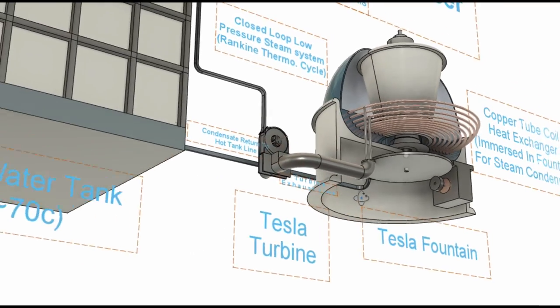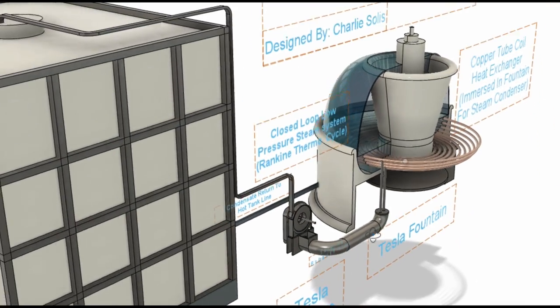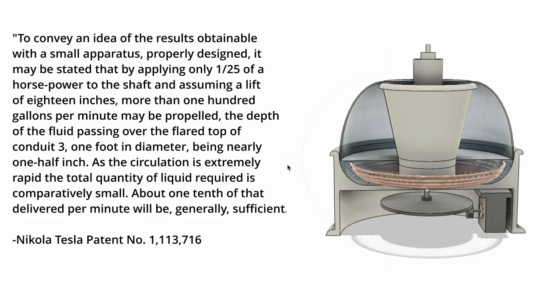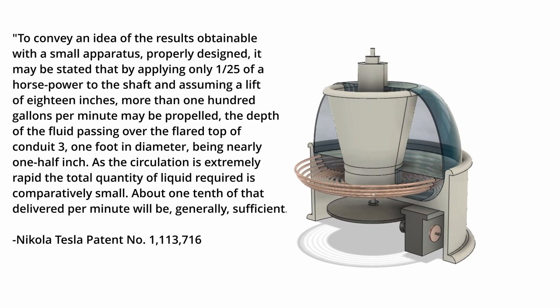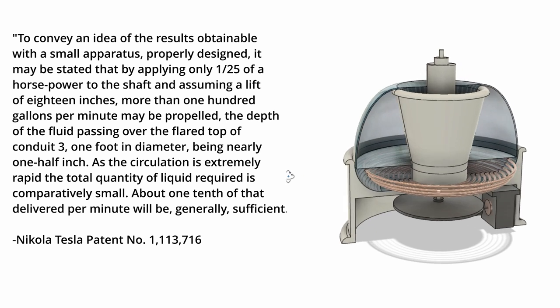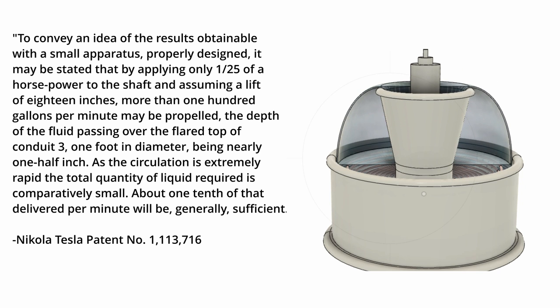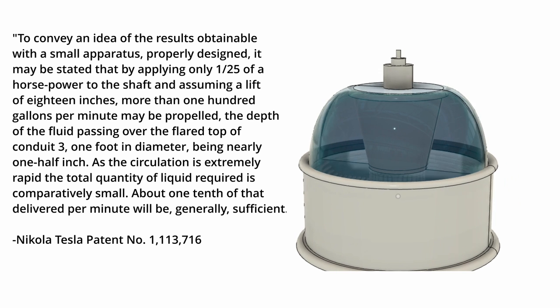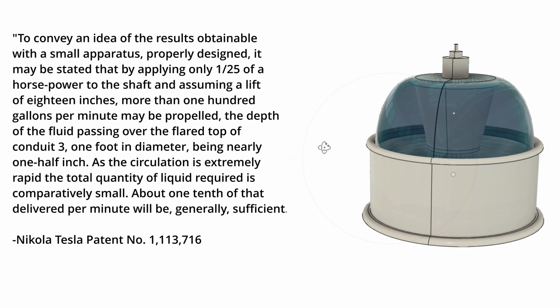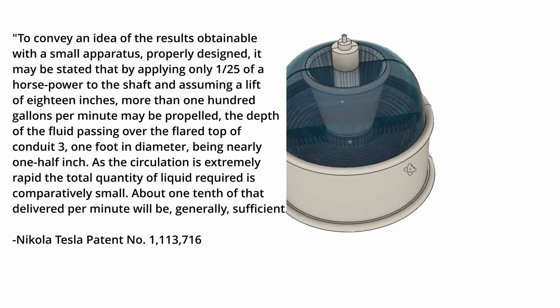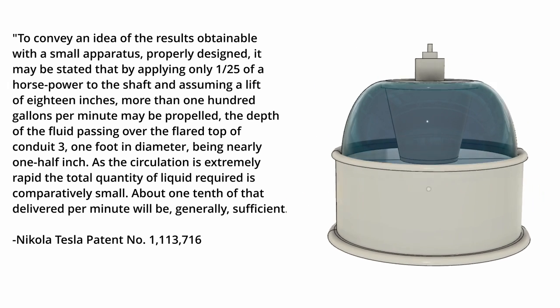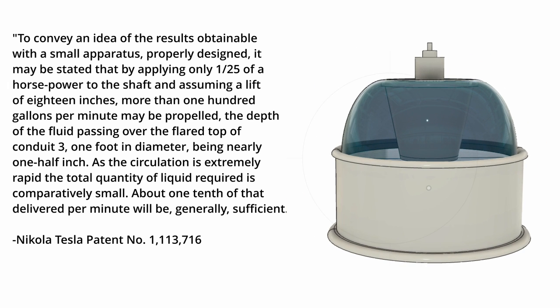The next quote from the patent that I would like to share is about the power requirements for operating the fountain itself. Tesla is quoted as saying, to convey an idea of the results obtainable with a small apparatus properly designed, it may be stated that by applying only 1/25th of a horsepower to the shaft and assuming a lift of 18 inches, more than 100 gallons per minute may be propelled. As the circulation is extremely rapid, the total quantity of liquid required is comparatively small. About 1/10th of that delivered per minute will be generally sufficient.